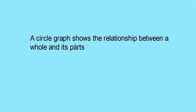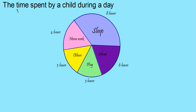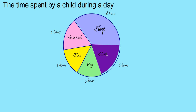A circle graph shows the relationship between a whole and its parts. Here is a pie chart showing the time spent by a child during a day. You can see the whole circle is divided into sectors of different sizes. The size of each sector is proportional to the activity it represents.